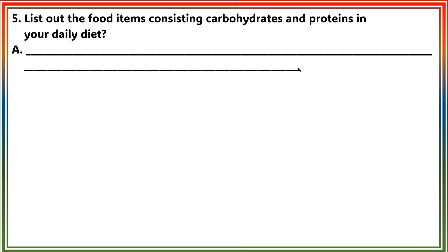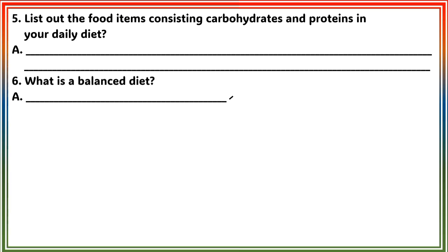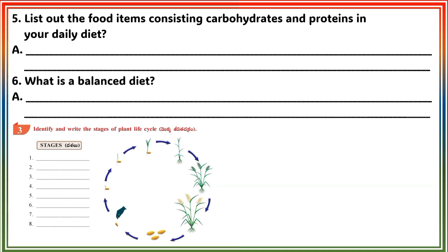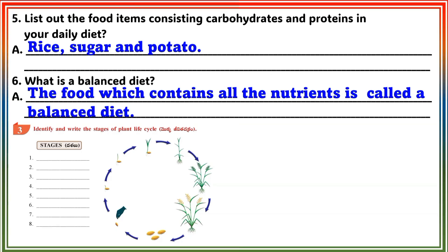Question 5: List out the food items consisting of carbohydrates and proteins in your daily diet. Answer: Rice, sugar, and potato. Question 6: What is a balanced diet? Answer: The food which contains all the nutrients is called a balanced diet.